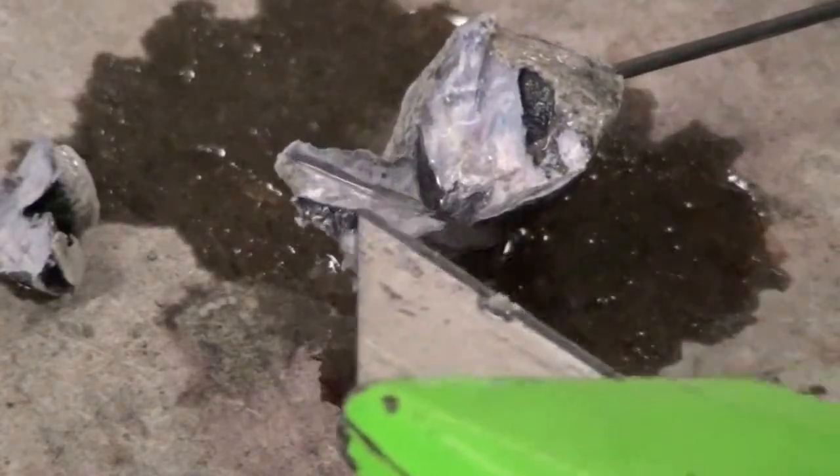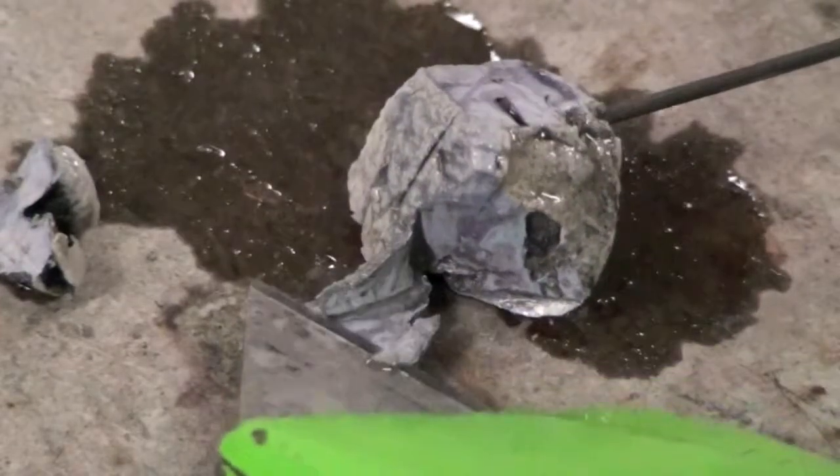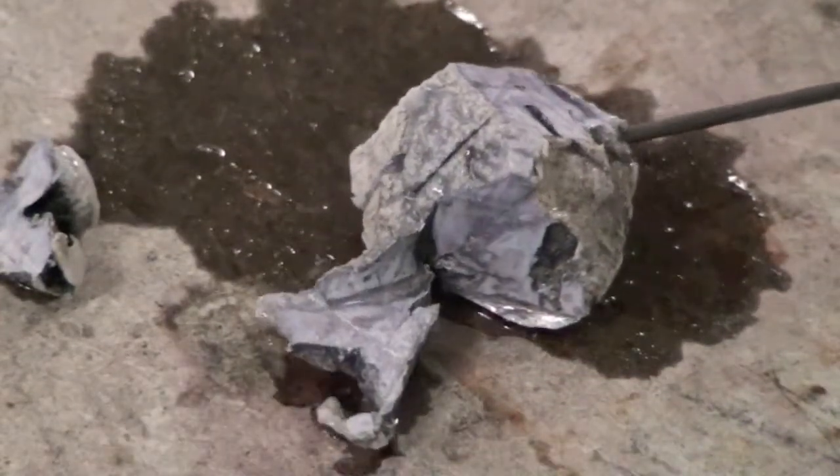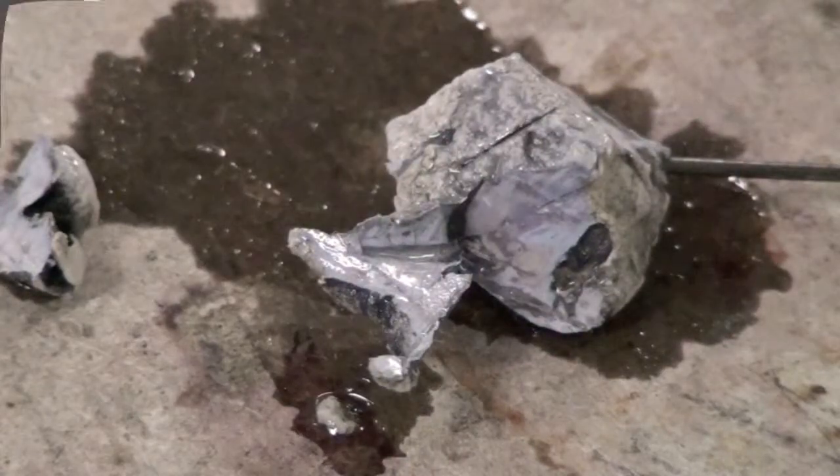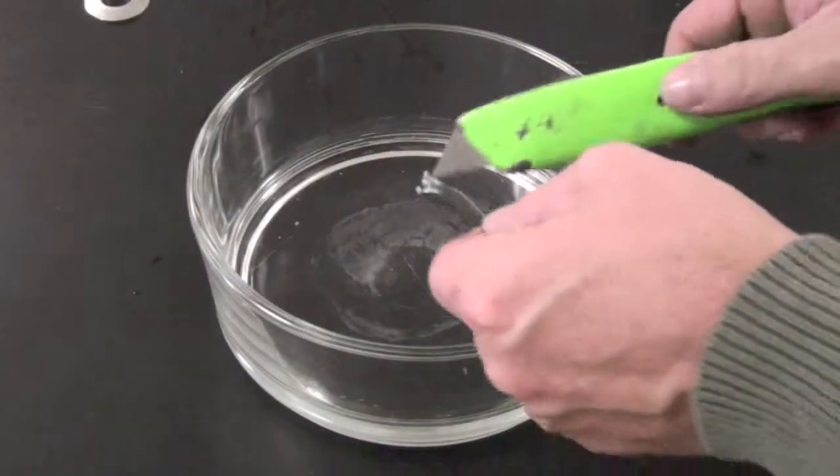Second to lithium, potassium is the lightest known metal, having a density of 0.86 grams per cubic centimeter, which explains why, when put in water, it floats.